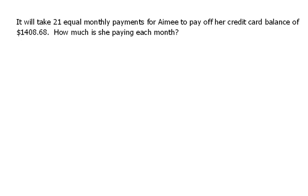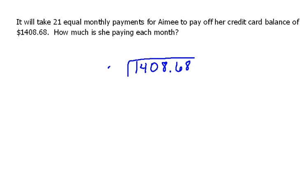But for our purposes, we're going to go with it and see what it would cost her to make 21 equal monthly payments and pay off this balance. If you think about it, if she's making 21 equal monthly payments, that means she's dividing that balance into 21 different payments. That tells us we're going to be dividing.